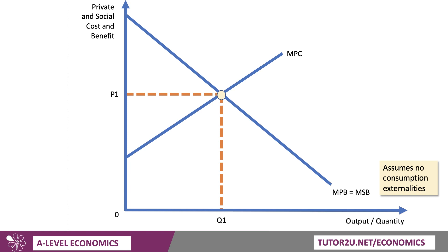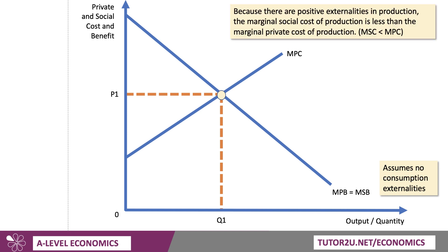Now let's work through the diagram. We have private and social costs and benefits on the y-axis, and output and quantity on the x-axis. We're going to assume there are no consumption externalities, so MPB equals MSB — we're only focusing on production externalities. With positive production externalities, the marginal social cost of production will be lower than the marginal private cost. So MSC lies below MPC on the diagram.